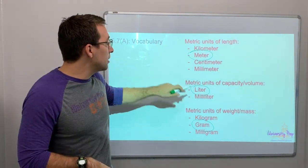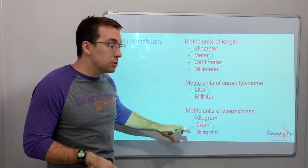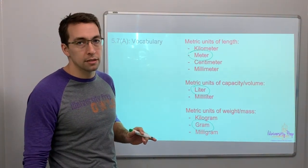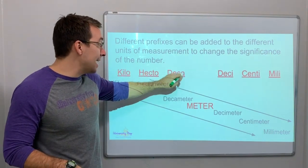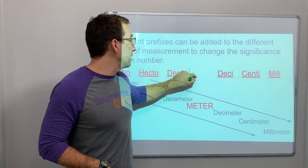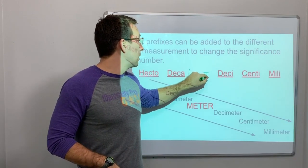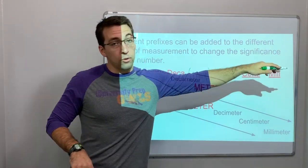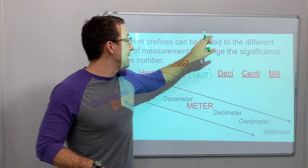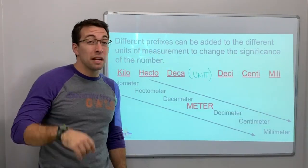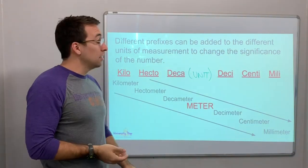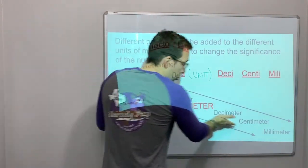This vocabulary, these specific ones have all been used on the star test. So, King Henry died unexpectedly, unit, drinking chocolate milk. Kilo, hecto, deca, deci, centi, milli. King Henry died unexpectedly drinking chocolate milk. This is from biggest to smallest.